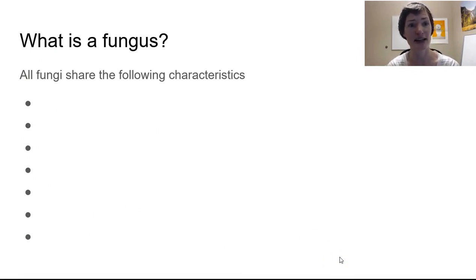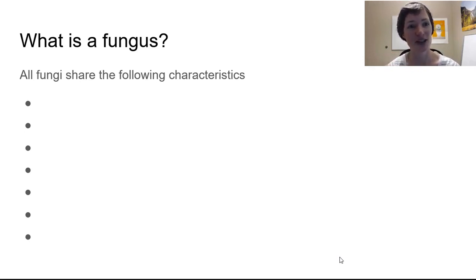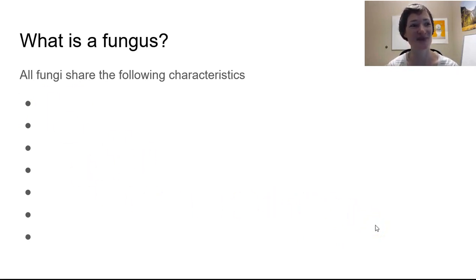To be a fungus there are a set of requirements here. Normally I would be writing on the screen and you would write them down with me. However, the writing system in this Canvas Studio program is very slow, so I'm not going to write at the same time as you. But I will cover all these characteristics one by one and you can pause now and write them down.